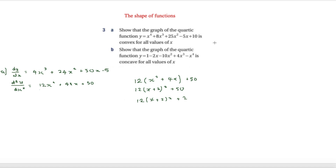The next question says: show that the graph of the quartic function y = 1 − 2x − 10x² + 4x³ − 4x is concave for all values of x, which means we have to show that d²y/dx² is less than zero for all values of x.